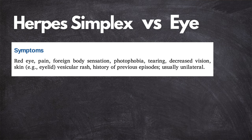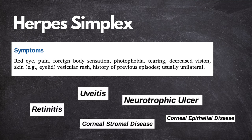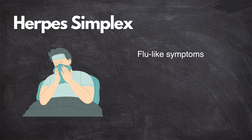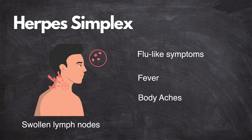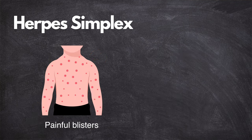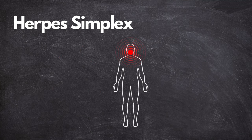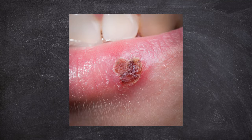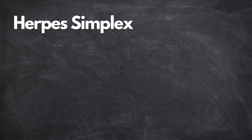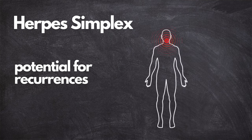The signs and symptoms of herpes simplex can vary from person to person. During the initial infection, individuals may experience flu-like symptoms including fever, body aches, and swollen lymph nodes. Following this, painful blisters or sores may develop in infected areas. In oral herpes, these blisters typically appear around the mouth or lips, while in genital herpes, they are found around the genital region. These blisters can break open, causing painful ulcers that eventually scab over and heal. One of the most distinguishing features of herpes simplex is its potential for recurrences — after the initial infection, the virus remains dormant in the body and can reactivate periodically, leading to recurrent outbreaks.